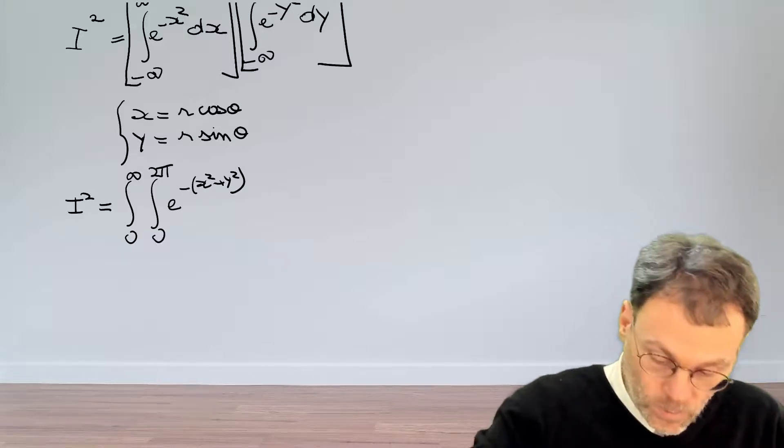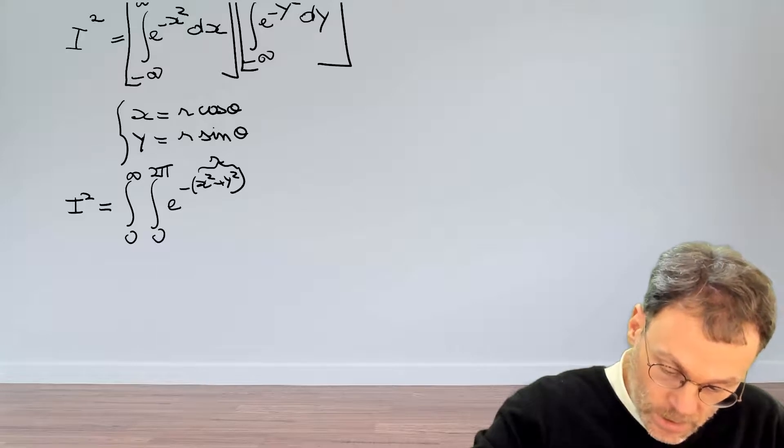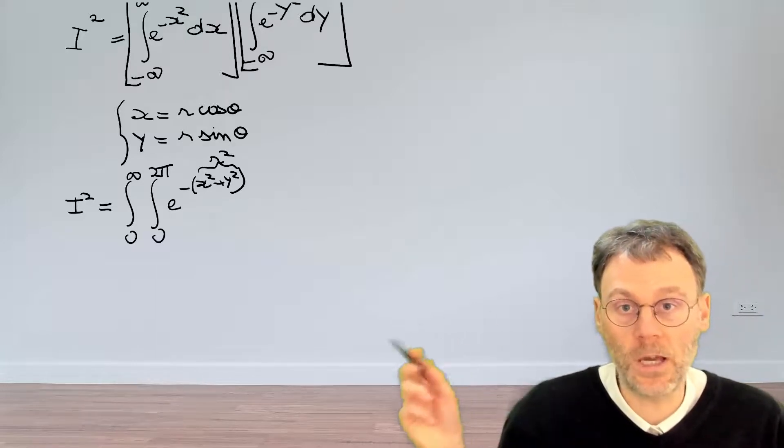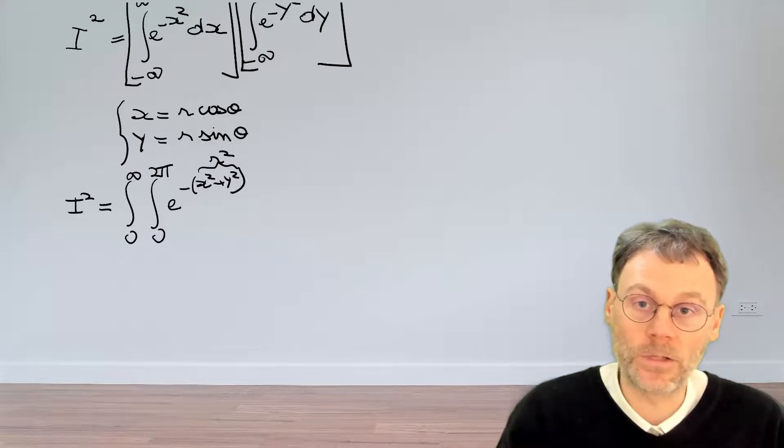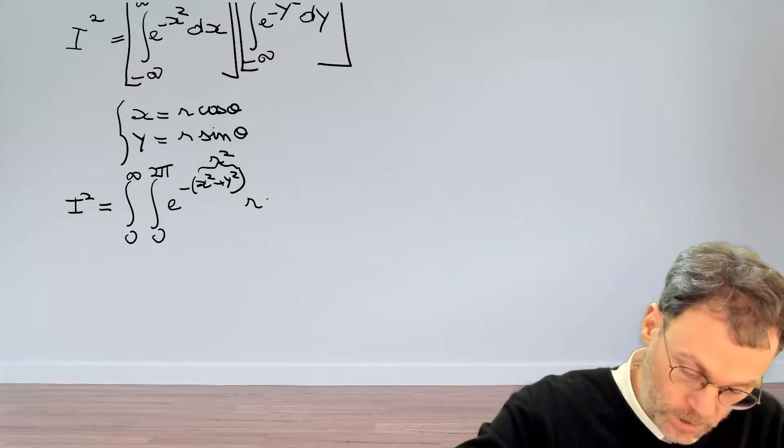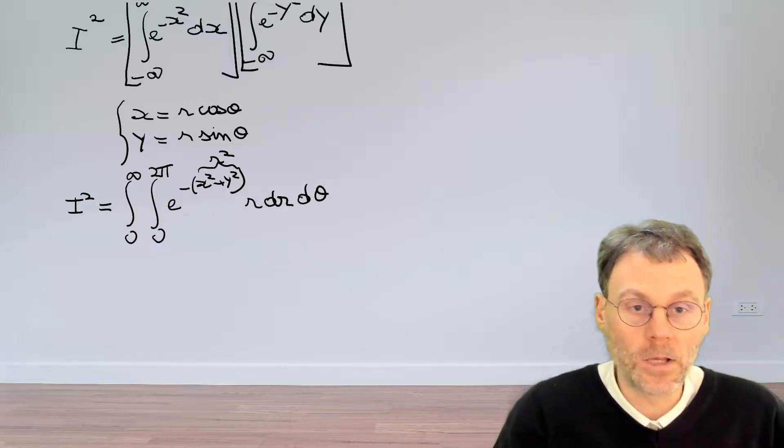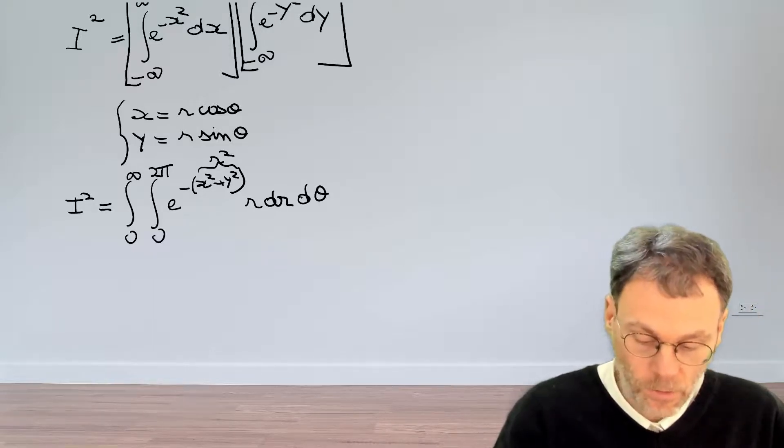Now x squared plus y squared, that's obviously going to be r squared. And then we have dx dy. So that surface element in polar coordinates becomes r dr d theta. So this is how we've simplified our integral.